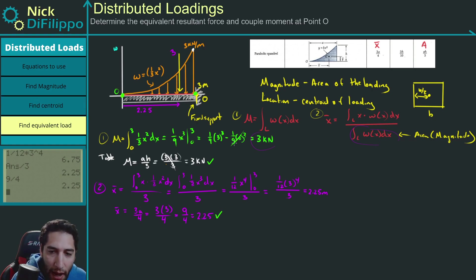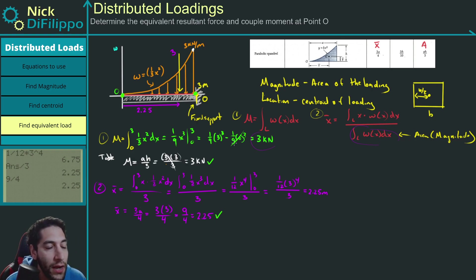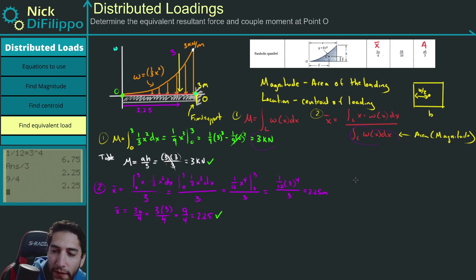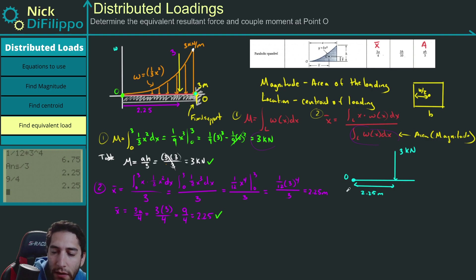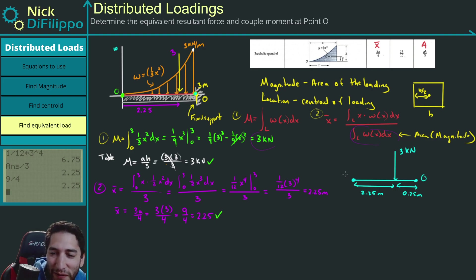So I have my magnitude of three kilonewtons and its location 2.25 meters from zero. The problem asks for an equivalent resultant force and couple moment at point O. Since the load acts 2.25 meters from zero, it acts 0.75 meters from point O. Let me draw the free body diagram with this simplified loading.